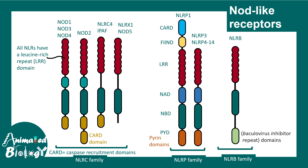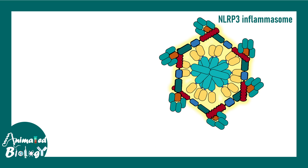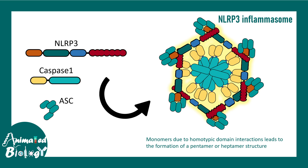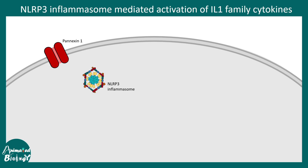NLRP3 inflammasome is the most common characterized inflammasome. Let's look at the assembly. There are three major components: NLRP3, which has a pyrin domain shown here in orange; caspase-1; and an adapter molecule known as ASC. Once this mega-complex is assembled, which often forms a pentamer or heptamer-like structure, it is able to cleave the pro-form of specific interleukins.